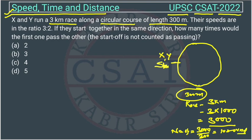So X and Y will take 10 rounds to complete the race of 3 kilometers. Their speeds are given — the speed of X and Y are in the ratio of 3 is to 2.